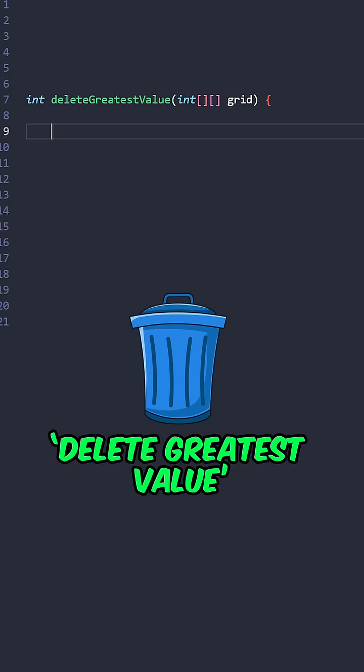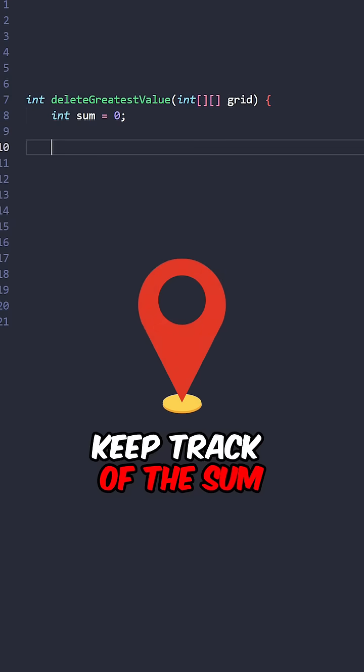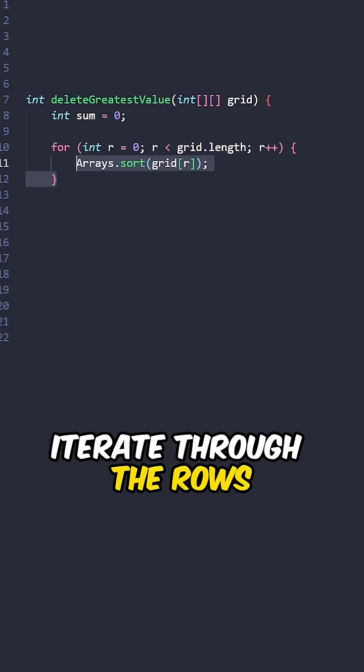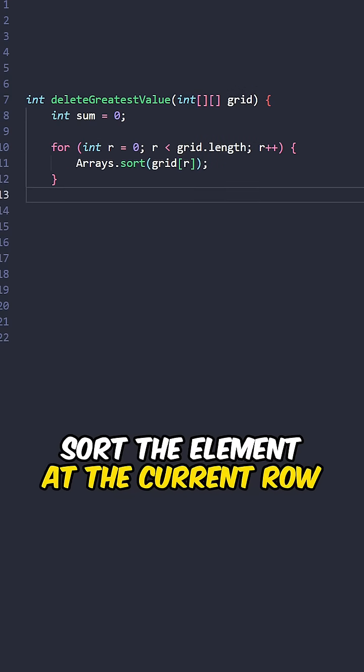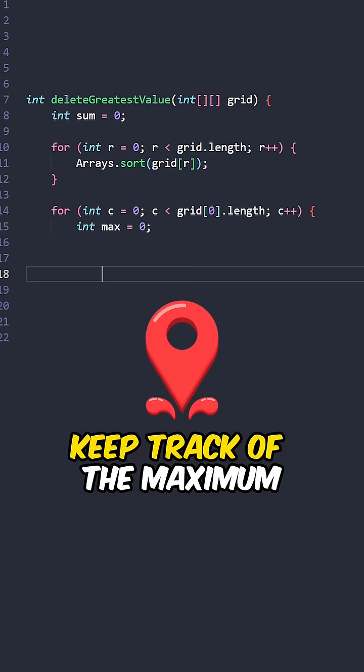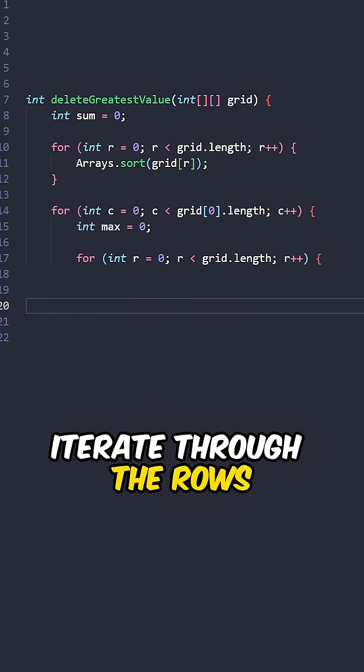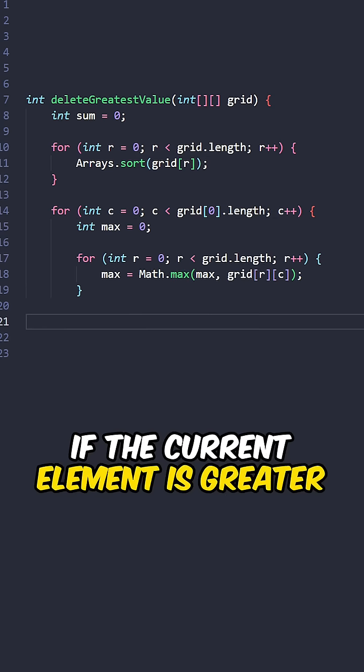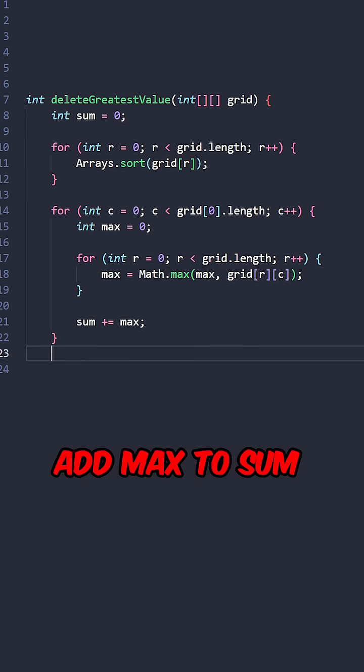Let's implement the function delete greatest value taking the input grid. Keep track of the sum, iterate through the rows, sort the elements at the current row. Iterate through the columns, keep track of the maximum, iterate through the rows, update max if the current element is greater, add max to sum, return sum.